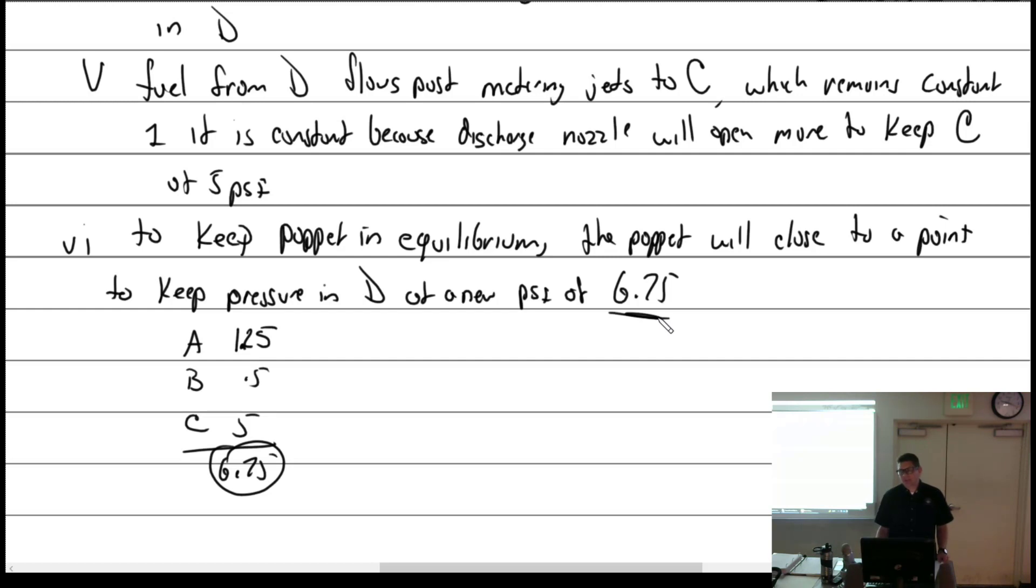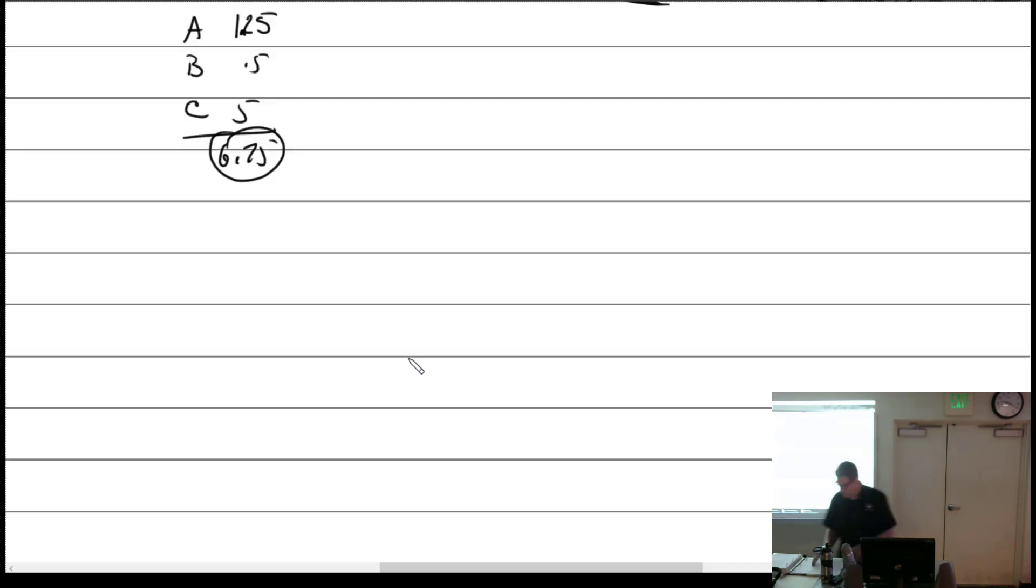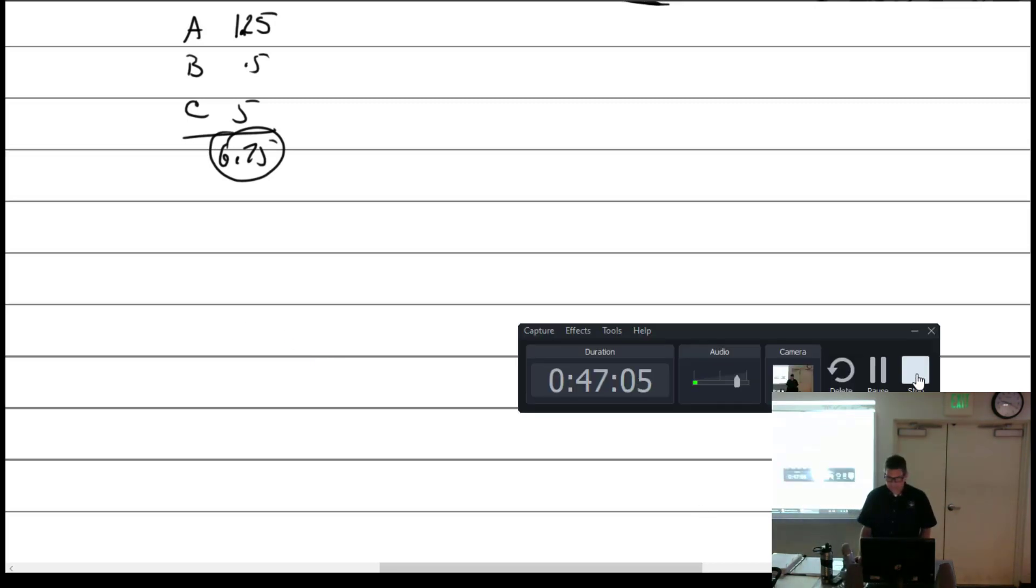I'm not going to write all this but we can do the same thing if we close the throttle. Everything goes in reverse. You lose a little bit of air metering force which starts to work its way closed. It cuts off fuel in D. I actually understand these more than I do the last one. It makes sense.